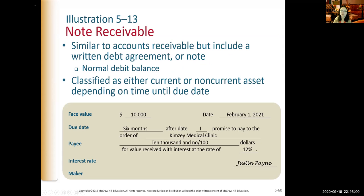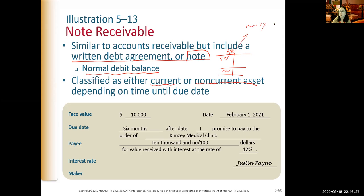Notes receivable is similar to accounts receivable but includes a written debt agreement or note. It has a normal debit balance and is classified as either a current or non-current asset. If the note is due in more than one year — for example, lending money to David for more than one year — it's a non-current asset. If it's due within three months, it's a current asset, depending on the due date.